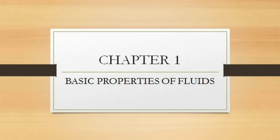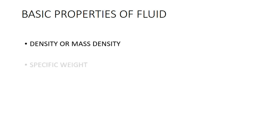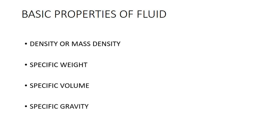Let's start our point of discussion with Chapter 1: Basic Properties of Fluid. Under this chapter, we are going to initially discuss about density or mass density, then we will explain specific weight, specific volume, and lastly specific gravity.